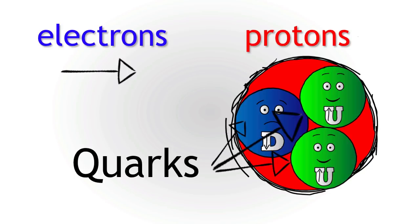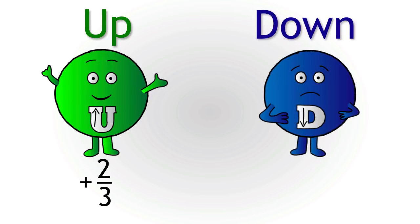At the time, there were two basic quarks. The up quark, which has a charge of plus two thirds of the charge of an electron, and the down quark, which has a charge of minus a third.